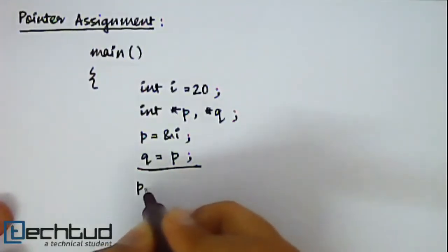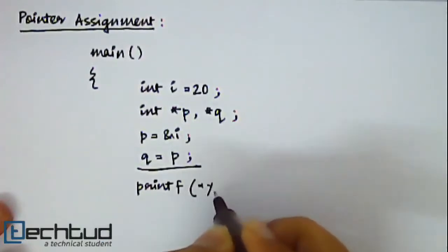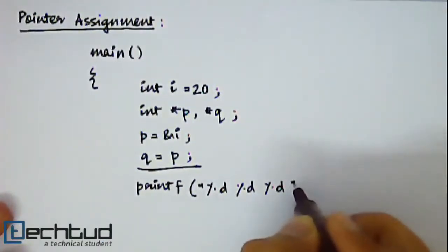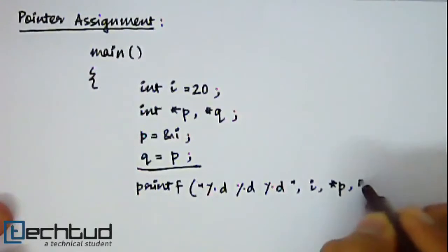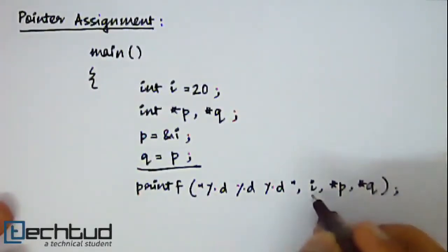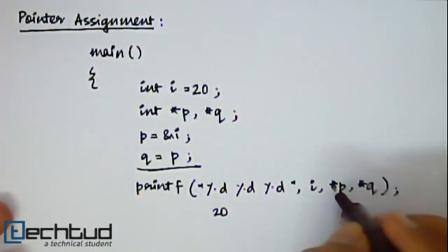So now if you print the values - the value of i, value of p, value of q - then the value of i which is 20 will be printed, then the value of star operator of p.